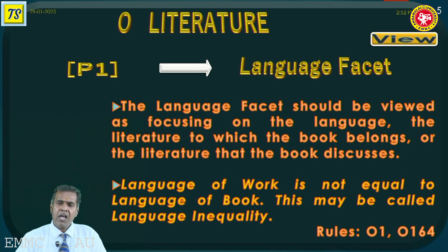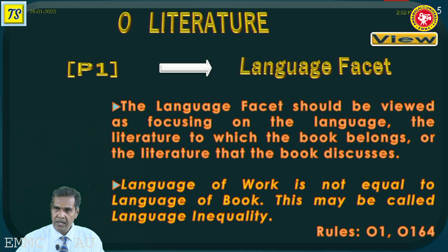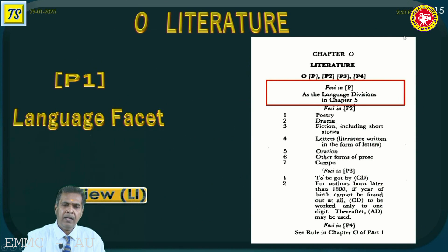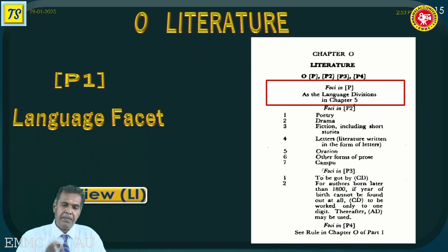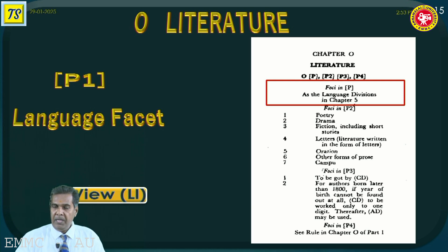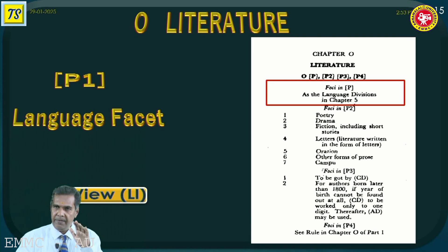The term language inequality must be recollected here. Language of work is not equal to language of book — keep it in mind. Language of work is different; language of book is different. In the CC 6th edition schedule, you can find the main class literature under chapter O. The highlighted part shows the personality facet round 1 level 1. The P1 — the 1 is not indicated here but is assumed. It is the round 1 level 1 category, so don't get confused. If the 1 does not exist, it means it is the level 1 category.